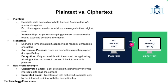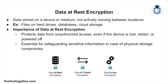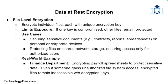Data at rest refers to data that is stored on a device or medium and is not actively moving from one location to another. Encrypting data at rest ensures that it remains secure even when the device is off or if the physical storage is compromised. The first level is file level encryption, which protects individual files by encrypting them independently. Each file is encrypted with its own key, ensuring that if one key is compromised it does not grant access to other files.